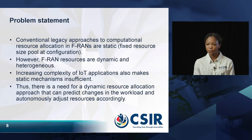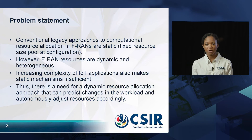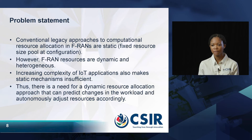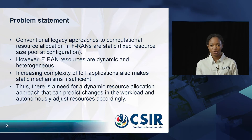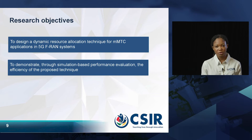According to our literature review, conventional approaches to the resource allocation problem in FRAN are static mechanisms in which a fixed amount of resources is allocated when the network is configured. However, FRAN resources are heterogeneous and dynamic in nature, and IoT applications are becoming increasingly more complex, making these static mechanisms insufficient. Therefore, there is a need for dynamic resource allocation methods that can predict changes in workload and autonomously adjust resources accordingly. This formed the basis of our study objectives: to design such a dynamic resource allocation technique and to evaluate its performance in a simulated network.